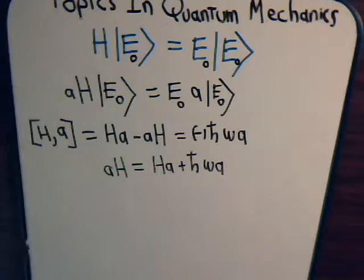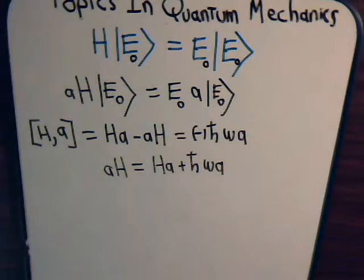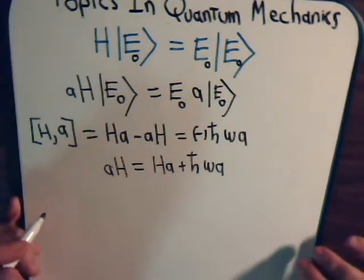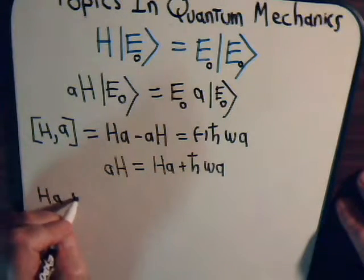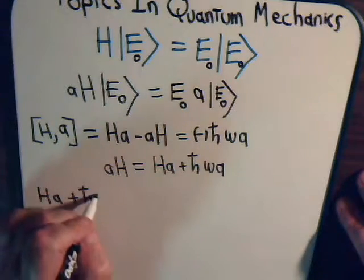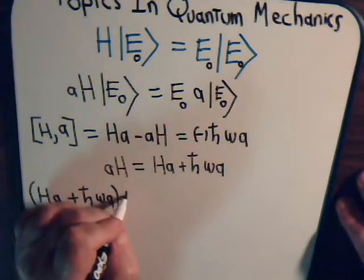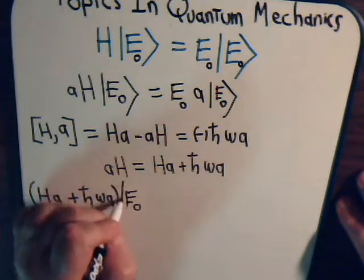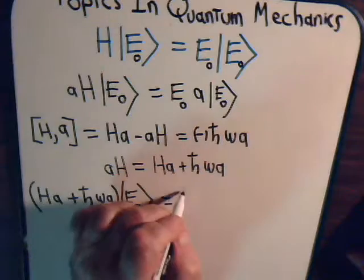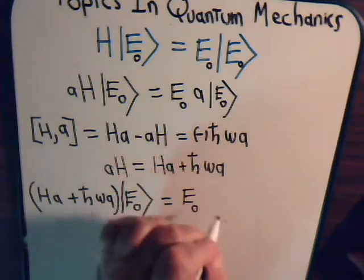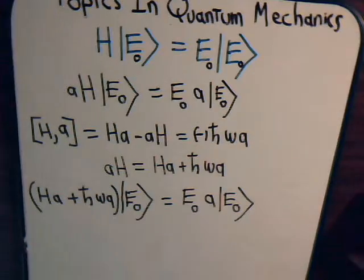So AH equals HA plus this term. Let's go ahead and substitute this for this up here. Now our equation becomes HA plus ℏω A multiplied by the energy eigenstate equals and the right-hand side of the equation doesn't change.